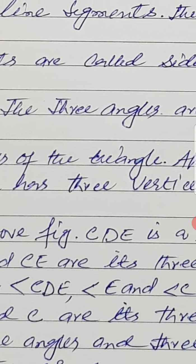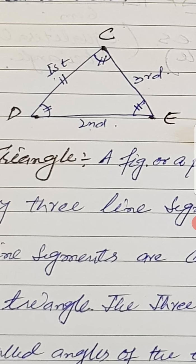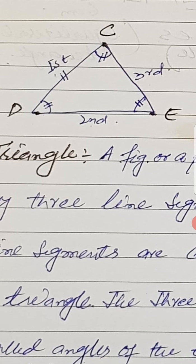In the above figure, triangle CDE has three sides. The first side is CD, the second side is DE, and the third side is CE. So in triangle CDE, the three sides are CD, DE and CE.